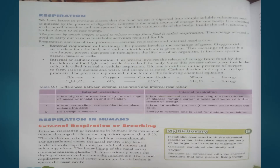Respiration. We have learned in previous class that the food we eat is digested into simple soluble substances such as glucose by the process of digestion. Glucose is the main source of energy for our body. It is absorbed in the small intestine and transported by blood to various cells of the body. Inside the cell, glucose is broken down to release energy. The process by which oxygen is used to release energy from food is called respiration — the process of breaking down of food in the presence of oxygen to give energy.